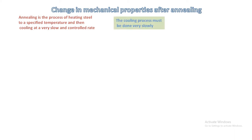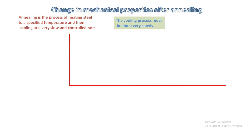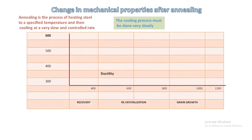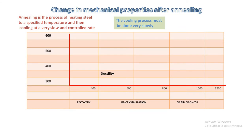During cold working the metal can become hardened to the extent that any more work will result in cracking. By annealing the metal beforehand, cold working can take place without any risk of cracking, as annealing releases mechanical stresses produced during the machining or grinding process. The cooling process must be done very slowly to produce a refined microstructure, thus maximizing softening.